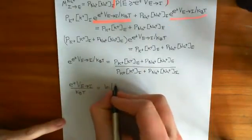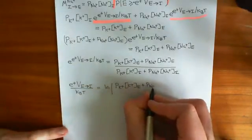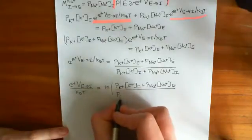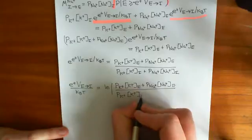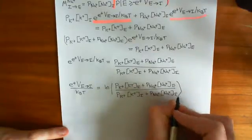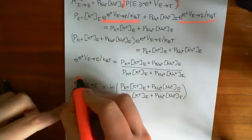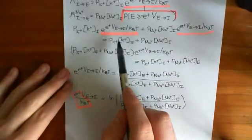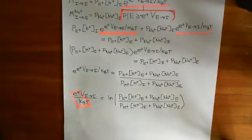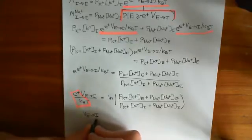We're getting close to the Goldman-Hodgkin-Katz constant field equation: the permeability of potassium times the potassium concentration extracellularly plus the permeability of the semipermeable membrane to sodium times the sodium concentration extracellularly, divided by the permeability of the membrane to potassium times the potassium concentration intracellularly plus the permeability of sodium times the sodium concentration intracellularly. Now we just take these constants to the other side to isolate the voltage — the voltage that makes the ion movements equal in both directions.